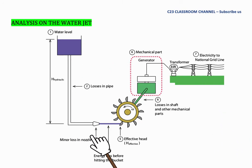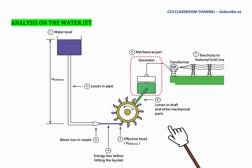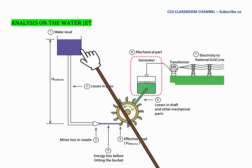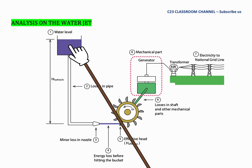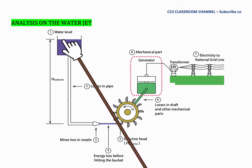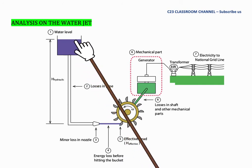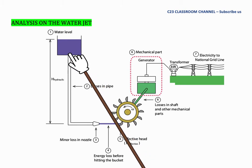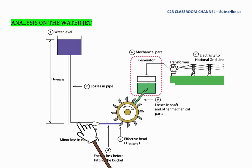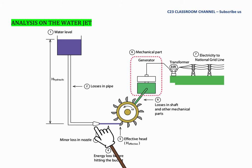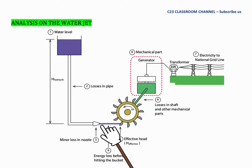This is the basic diagram of the Pelton wheel. We have a water dam here, drawn as a water tank, with a high water level. The water flows through a pipe system, and to increase the velocity we have a nozzle at the end of this pipe. The nozzle will increase the velocity of the water jet coming out from it.